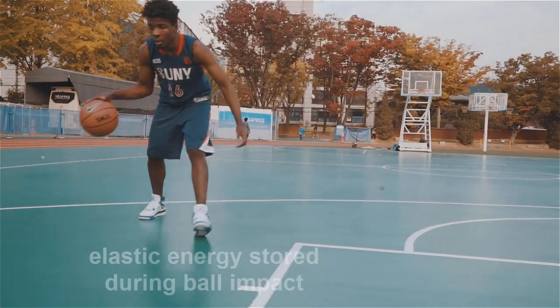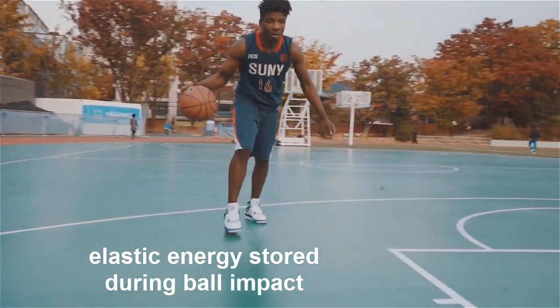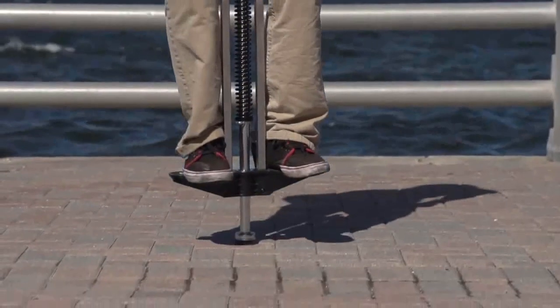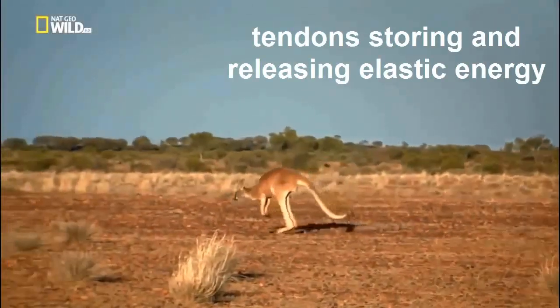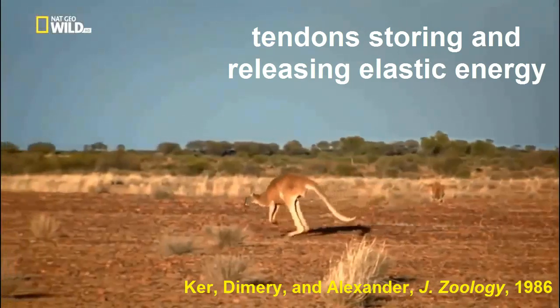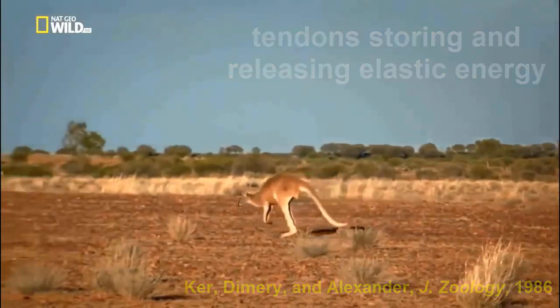In our lives, we use springs in clicking a pen, bouncing balls, and pogo sticks. The jumping mechanism of the pogo stick is similar to that of a kangaroo. Kangaroos use the elasticity in their tendons to hop, with more than a third of their energy coming from the stored elastic energy in their tendons.